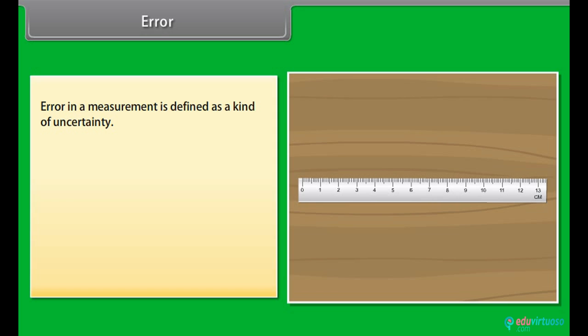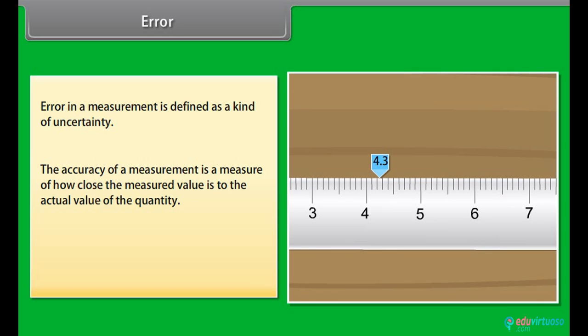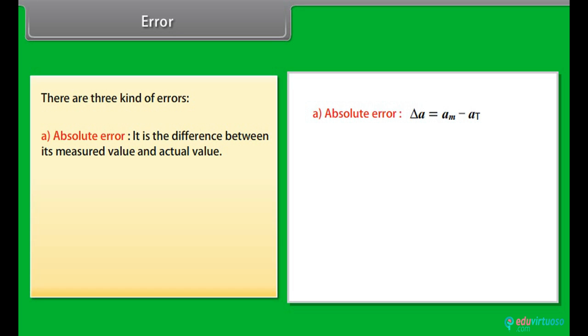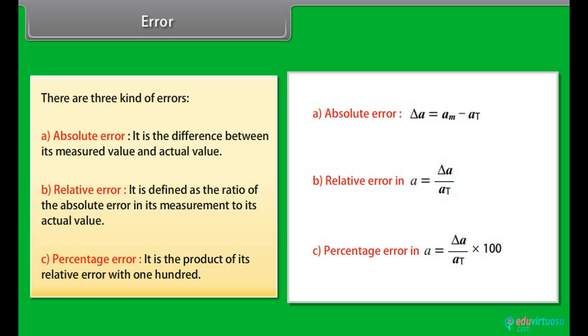Error. The result of every measurement by any measuring instrument contains some uncertainty. Error in a measurement is defined as a kind of uncertainty. The accuracy of a measurement is a measure of how close the measured value is to the actual value of the quantity. Precision tells us to what resolution or limit the quantity is measured. There are three kinds of errors: Number 1: Absolute error - it is the difference between its measured value and actual value. Number 2: Relative error - it is defined as the ratio of the absolute error in its measurement to its actual value. Number 3: Percentage error - it is the product of its relative error with 100.